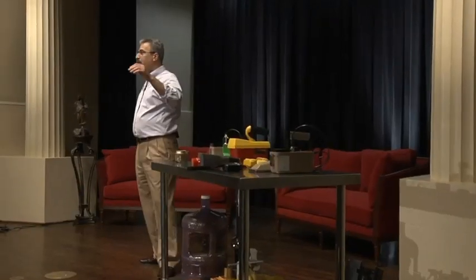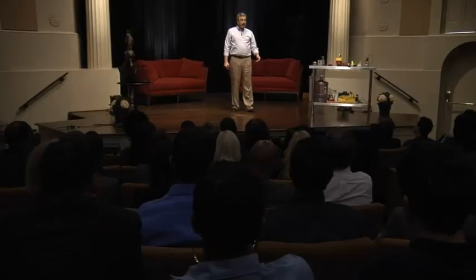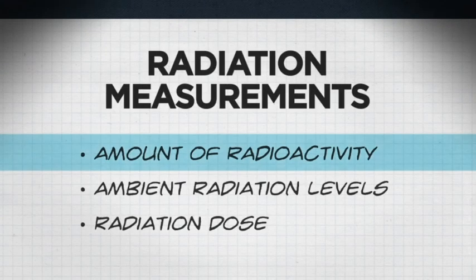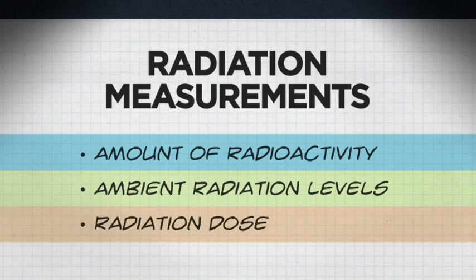When we work with radiation, there are different types of measurements that we can make. When we talk about the amount of radioactivity or levels of radiation, they don't necessarily correspond to the size, weight, or volume of a radioactive source. The three types of measurements that we can make are: the amount of radioactivity, ambient radiation levels, and radiation dose.